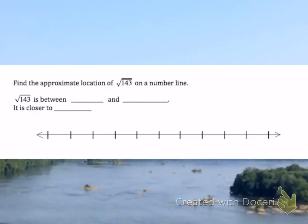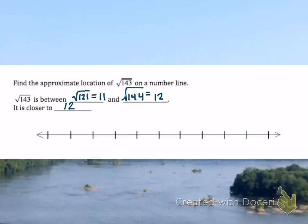We want to find the approximate location of the square root of 143. Since 143 is not a perfect square, the perfect square below it is 121, and the square root of 121 is 11. The perfect square above 143 is 144, and the square root of 144 is 12. So the square root of 143 is between 11 and 12. Because 143 is really close to 144, it's going to be very close to 12. I put my dot right next to 12 and label it.